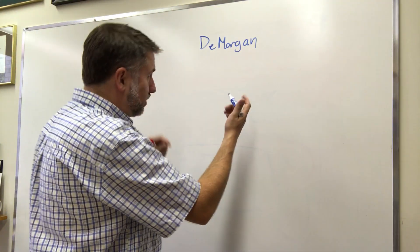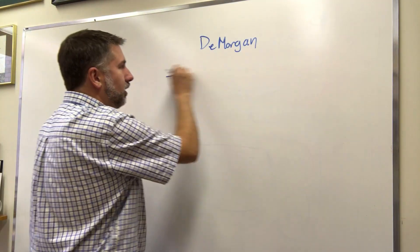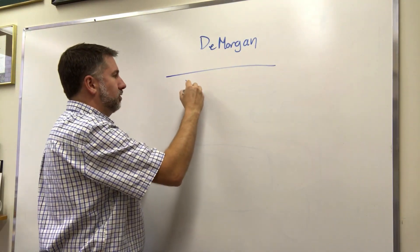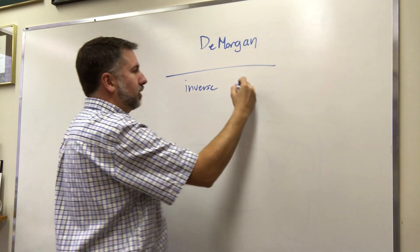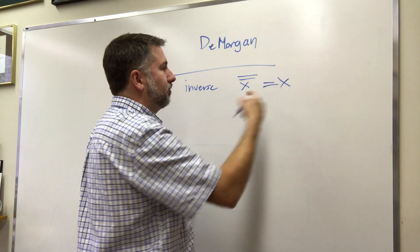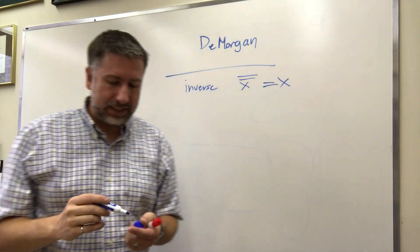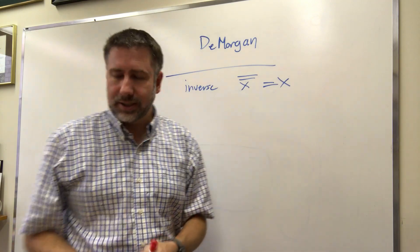Before we get to De Morgan, we'll look at inverse. What we can say is that X prime prime equals X. If you invert a value and then invert it again you get the original value back again. This is intuitive, it makes sense, but it's worth noting because we'll use that later as well.